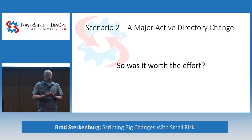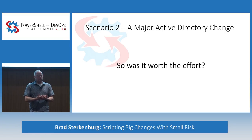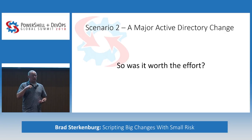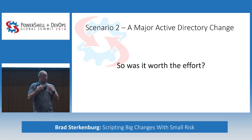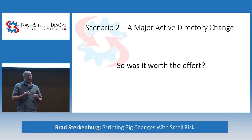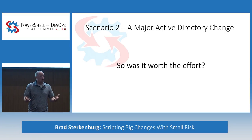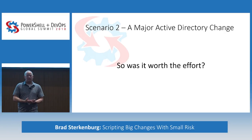That smash-and-crash approach doesn't work. It can't work as well as this process of scripting big changes with small risk. Because I am very human — I make a lot of mistakes. Jeffrey Snover even alluded to that. Nobody's perfect. We're all fallible people. We make mistakes.